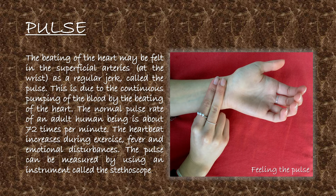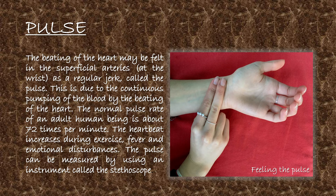Pulse: the beating of the heart may be felt in the superficial arteries at the wrist as a regular jerk called the pulse. This is due to the continuous pumping of blood by the beating of the heart. The normal pulse rate of an adult human being is about 72 times per minute. The heartbeat increases during exercise, fever and emotional disturbances. The pulse can be measured using an instrument called the stethoscope.